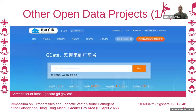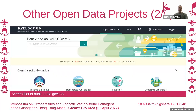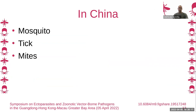Guangdong also has its own portal at gdata.gd.gov.cn, and Macau has a data portal at data.gov.mo. The Hong Kong portal is the largest of the three. For the rest of this presentation, I will focus on China and on mosquitoes, ticks, and mites.